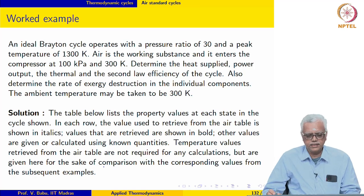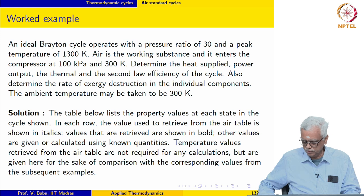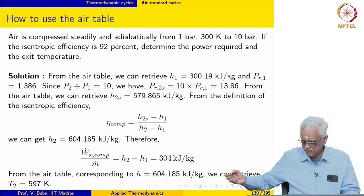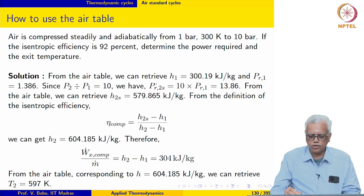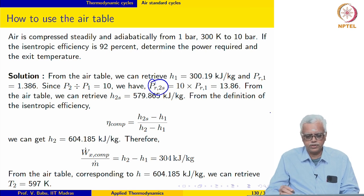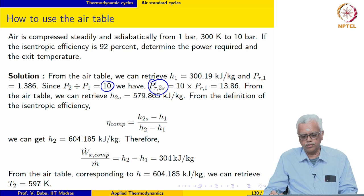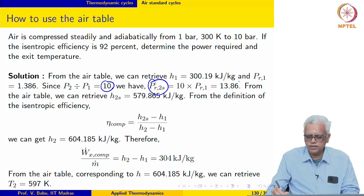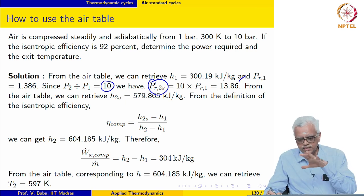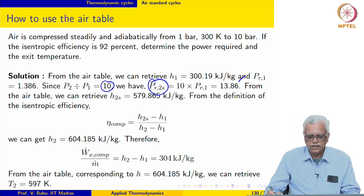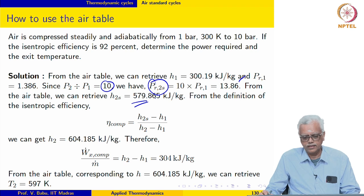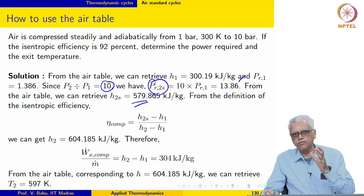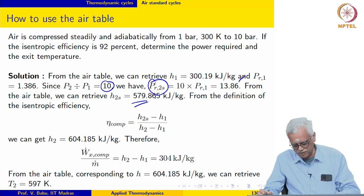Before we proceed with the worked example, let me illustrate an alternative method for using the air table. We mentioned that for an isentropic process we can calculate the reduced pressure using the actual pressure ratio. By using the fact that Pr2s over Pr1 equals P2 over P1, we computed the value for Pr2s and then with this value we went into the table to retrieve the value for h2s. This can be done in a slightly different manner without using the reduced pressure itself.